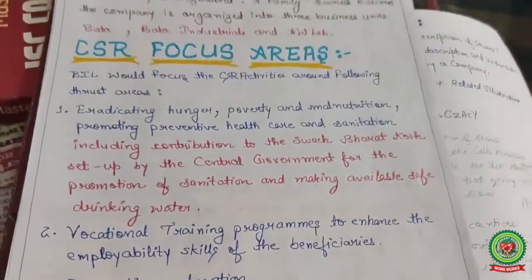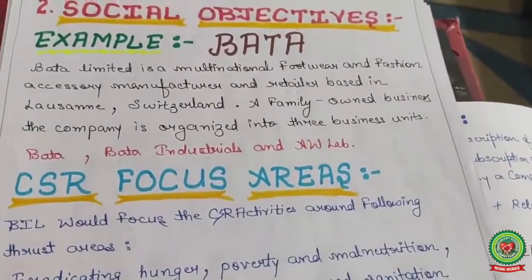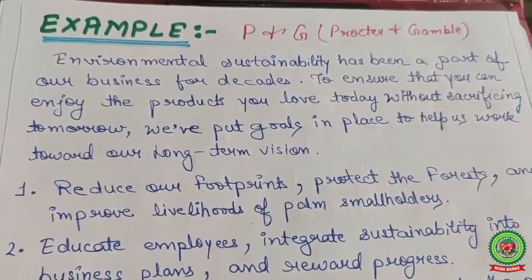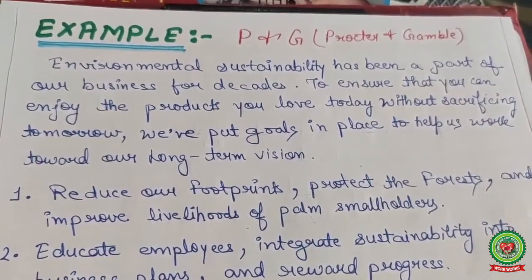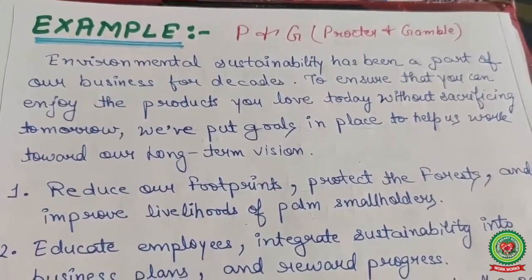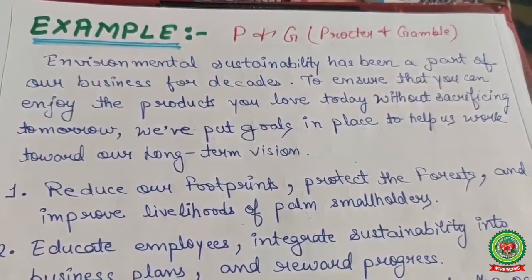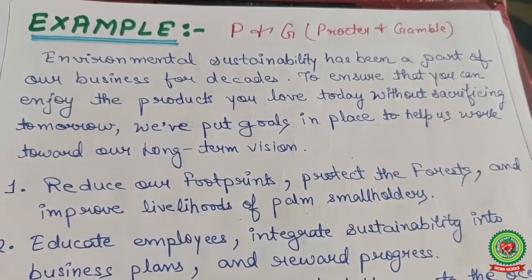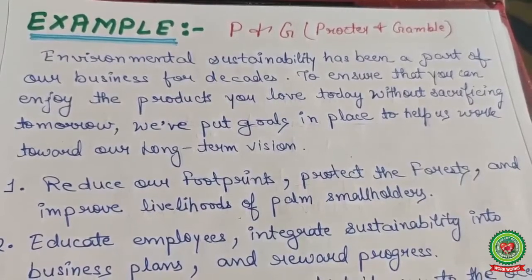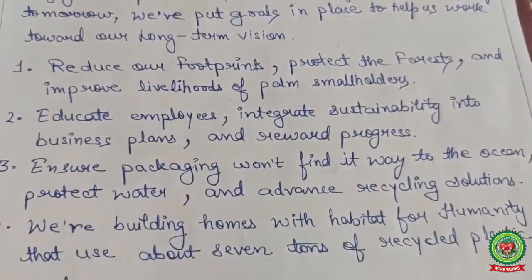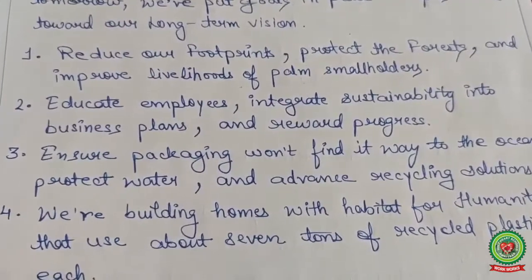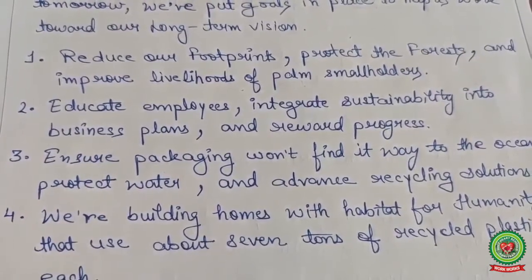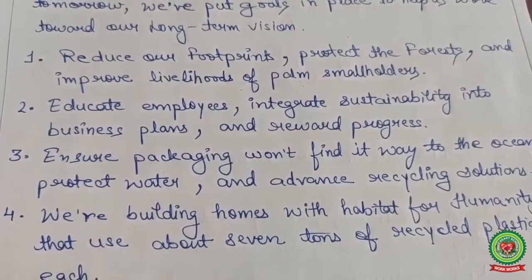Now let's take one more example: Procter and Gamble — P&G — a very famous company. Environmental sustainability has been a part of their business for decades, to ensure you can enjoy products today without sacrificing tomorrow. Their CSR goals include: first, reducing their footprint, protecting forests, and improving the livelihoods of small-holder farmers.